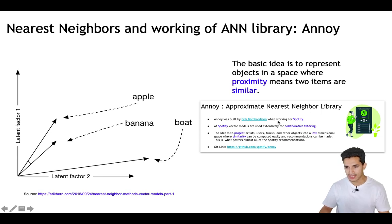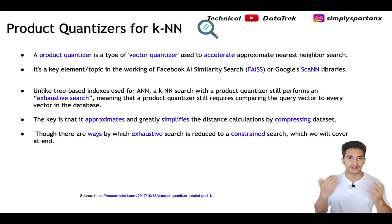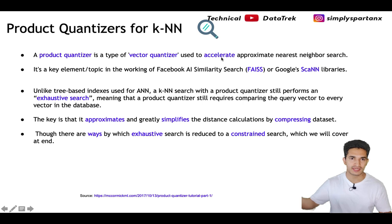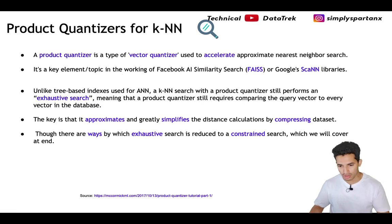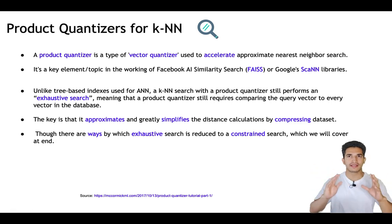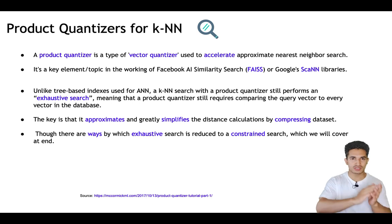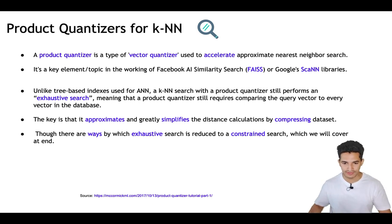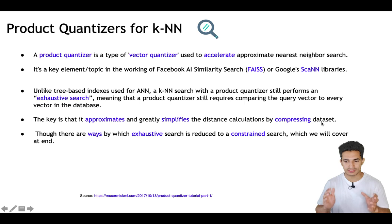We have already seen how Annoy does it in a past video — I will add the link in the description. Now, how does product quantizer work? Product quantizer is a type of vector quantizer that accelerates approximate nearest neighbor search. It is the key building block of ANN libraries like Facebook AI Similarity Search (FAISS) and Google's ScaNN. Unlike tree-based methods like Annoy, which reduce exhaustive search to a constrained search by looking only at a fixed set of nodes, product quantizer still does an exhaustive search.